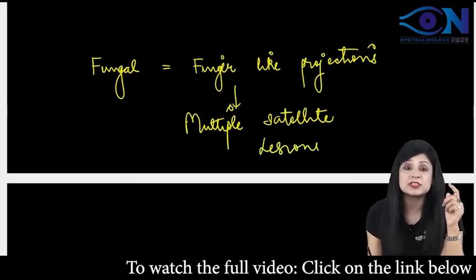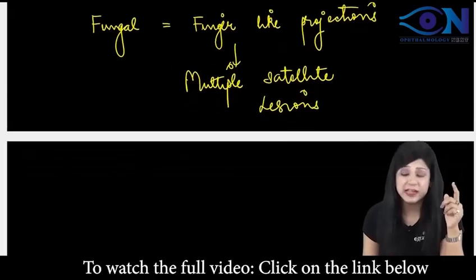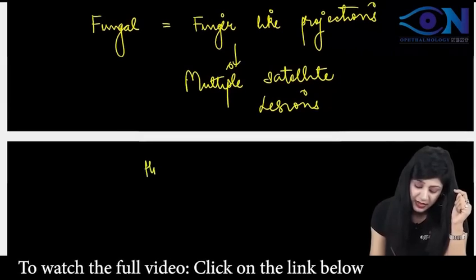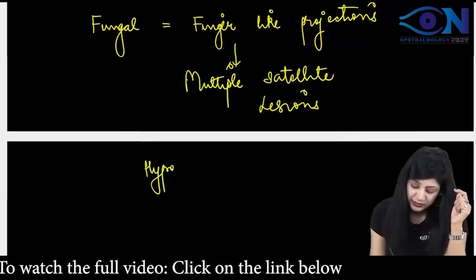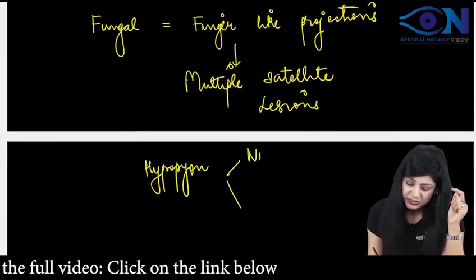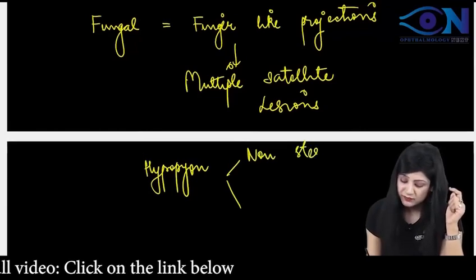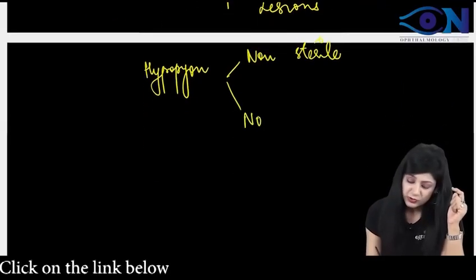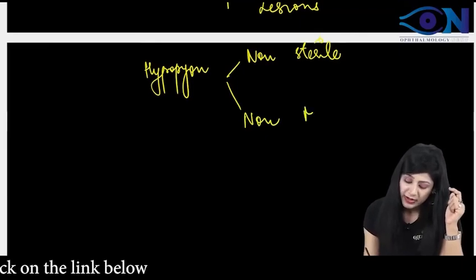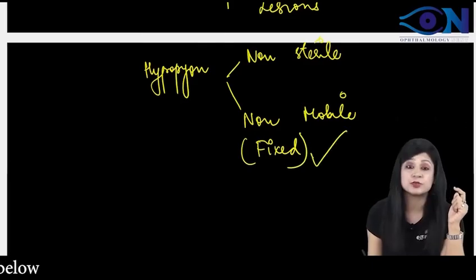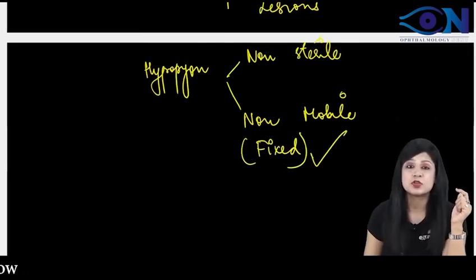Due to multiple satellite lesions and finger-like projections, we are also going to get a hypopion. This hypopion will be non-sterile because it is invading, and also non-mobile — which can also be called fixed. So F for fungal, F for fixed as well.